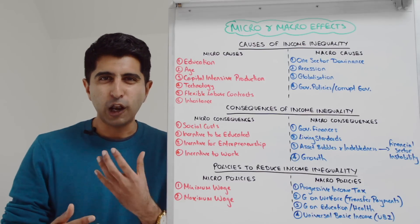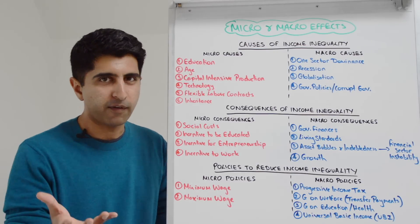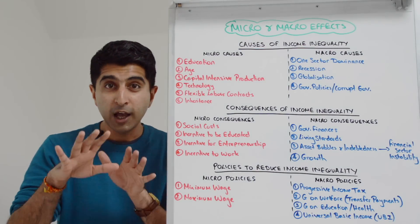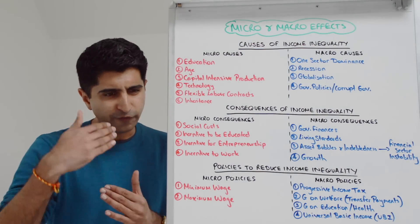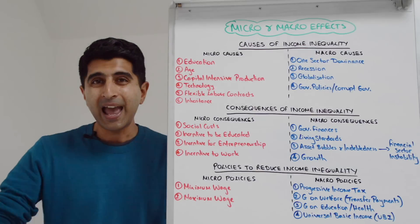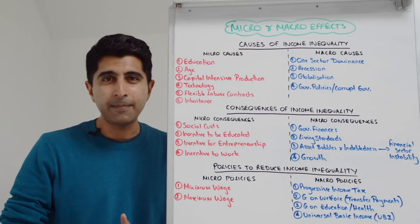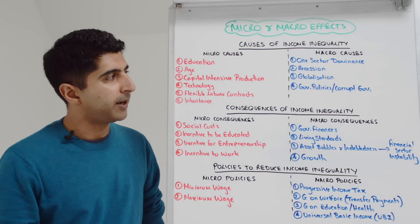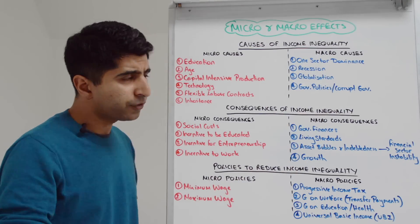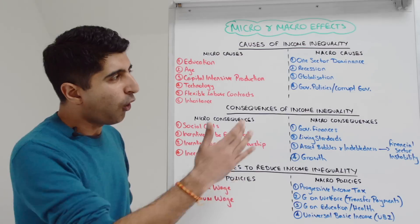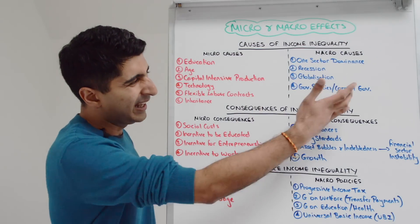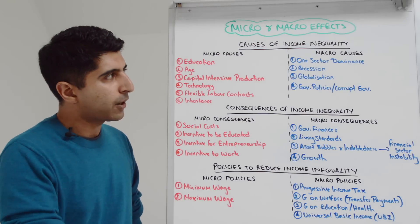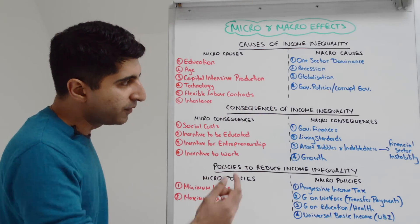When it comes to inward FDI, profit-motivated firms may cut costs by reducing wages or forcing workers onto flexible contracts. Immigration increases the supply of labor, especially in lower-skilled professions, which can reduce wages and drive up inequality. And of course, a lack of government policies to redistribute income — or corrupt governments that don't implement equity-promoting policies — is a macro cause of inequality.